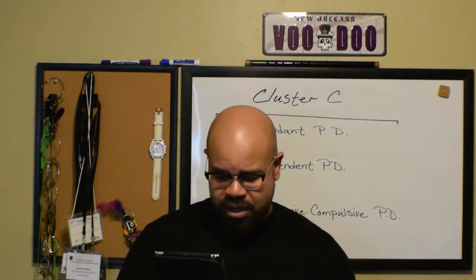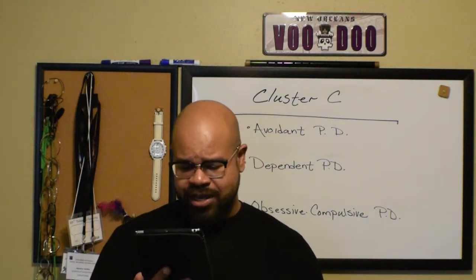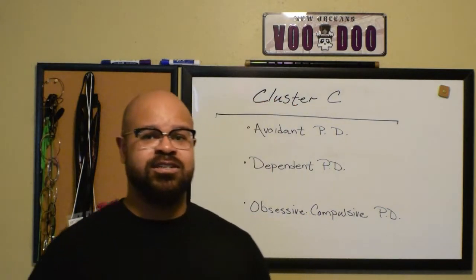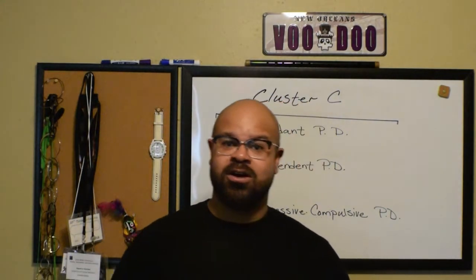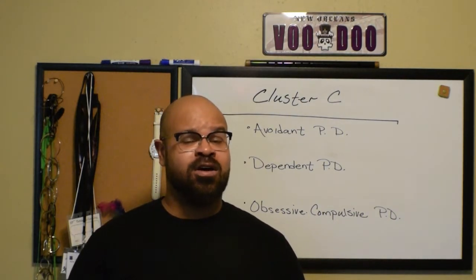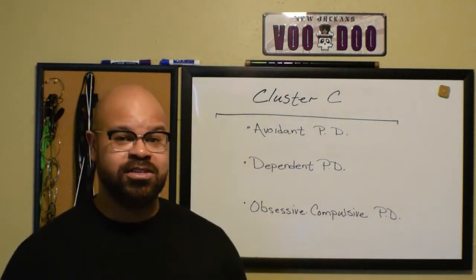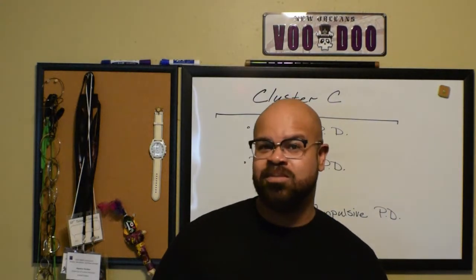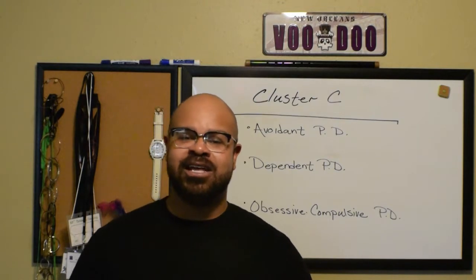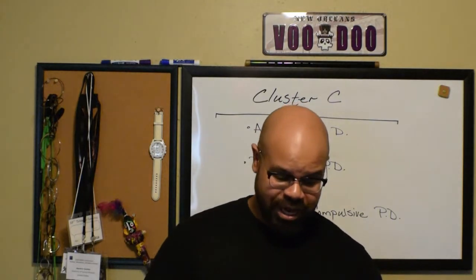Number two — shows perfectionism that interferes with task completion, such as being unable to complete a project because of overly strict standards. This is not procrastination — they're working really hard on it, but it's just not there yet. They're going to turn things in late or miss deadlines often, because they feel the need to keep working on it until it meets their standards.